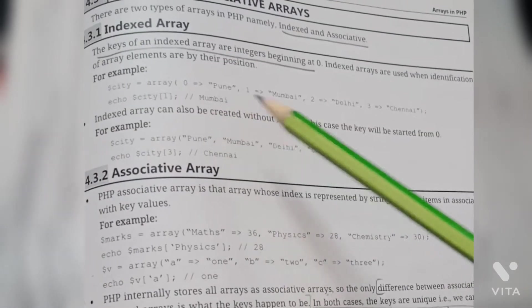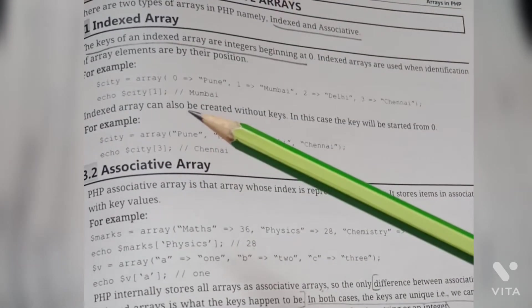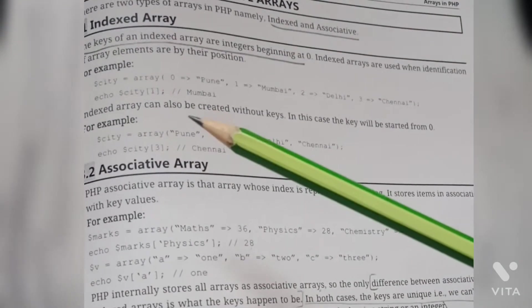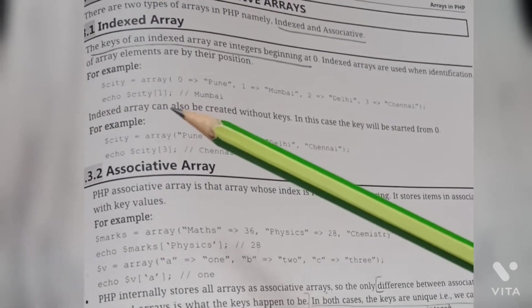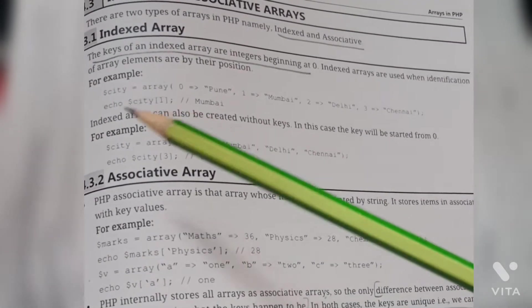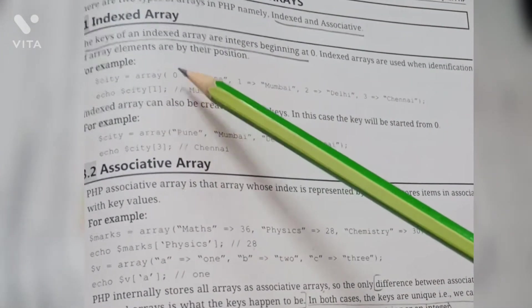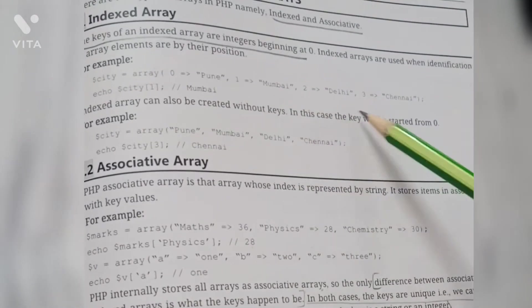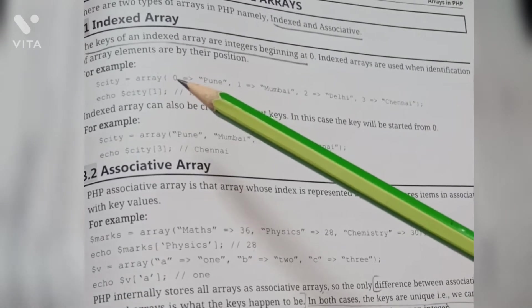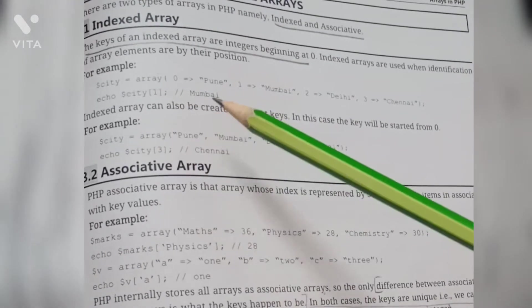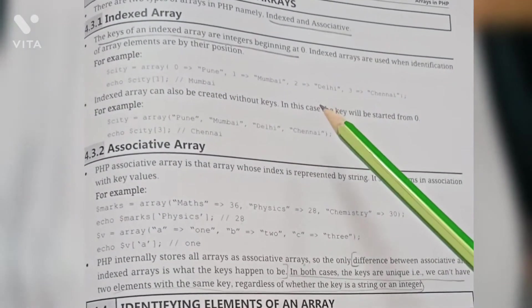In the previous video of introduction to arrays we learned how to create an array. If you haven't watched that video, link is given in the description box. Let's continue with this example. In this example, zero, one, two and three - these are called keys or index. Pune, Mumbai, Delhi and Chennai - these are values.